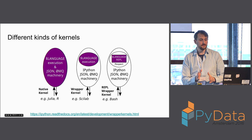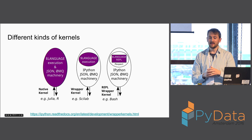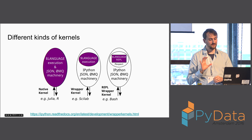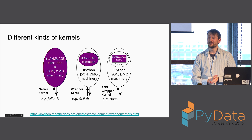The REPL wrapper is the most limited kind of kernel, but sometimes it's all you've got. If the only API you have for evaluating code in your language is instantiating that language's own existing REPL, you can use this to bootstrap and get that into the notebook. The reference example of this is the bash kernel, which instantiates a bash interpreter, sends it code, and gets stdout and stdin back.